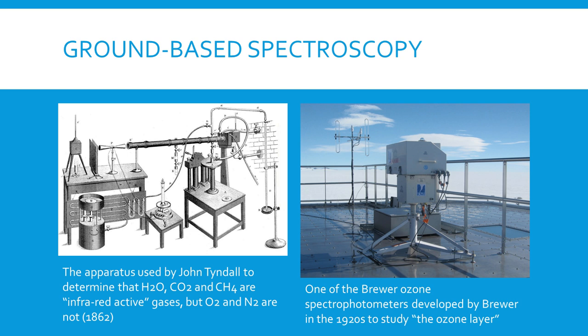Spectroscopy — looking at wavelengths of light — was another tool. The ozone layer was first identified in the early 20th century by looking at spectrophotometers and the light coming through the atmosphere. Scientists noticed missing bits in the spectra due to ozone, and realized the ozone existed somewhere up in the atmosphere. It was later identified at about 40 kilometers up — the ozone layer.